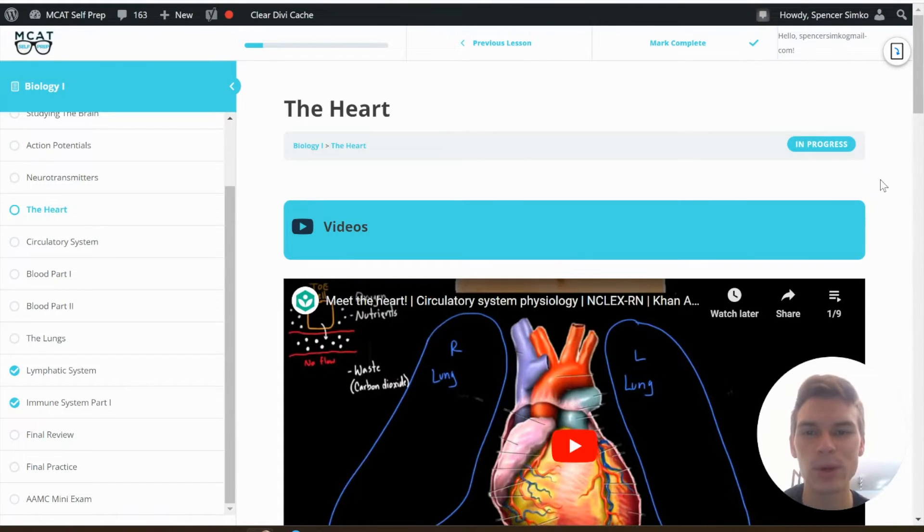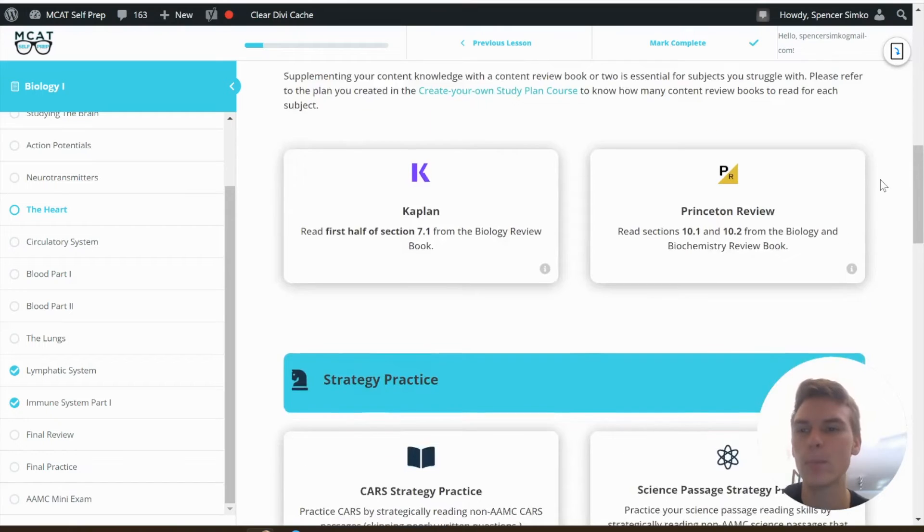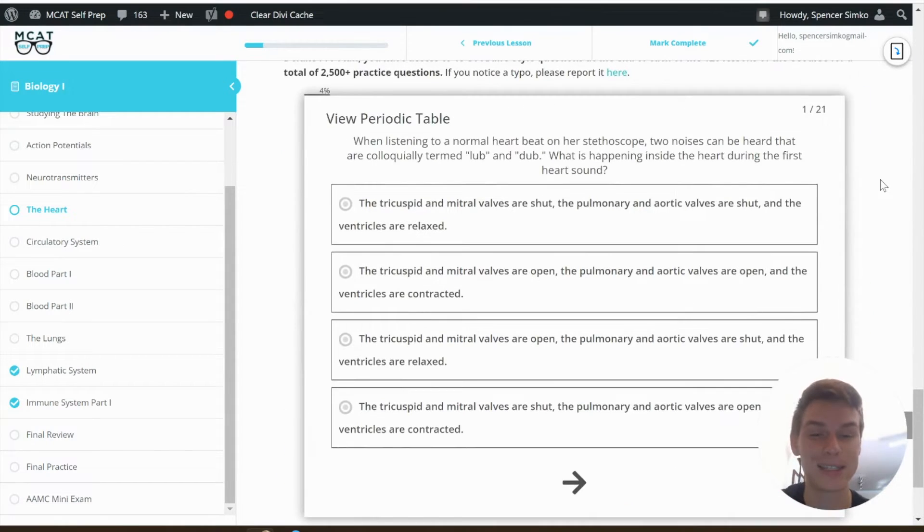My name is Spencer Simcoe, a 97 percentile MCAT tutor, and I'll be walking you through today's practice problems if you're one of my private tutoring students. Today's problem comes from Biology 1, Lesson 6. Be sure to hit pause and try this question out for yourself before watching my explanation.